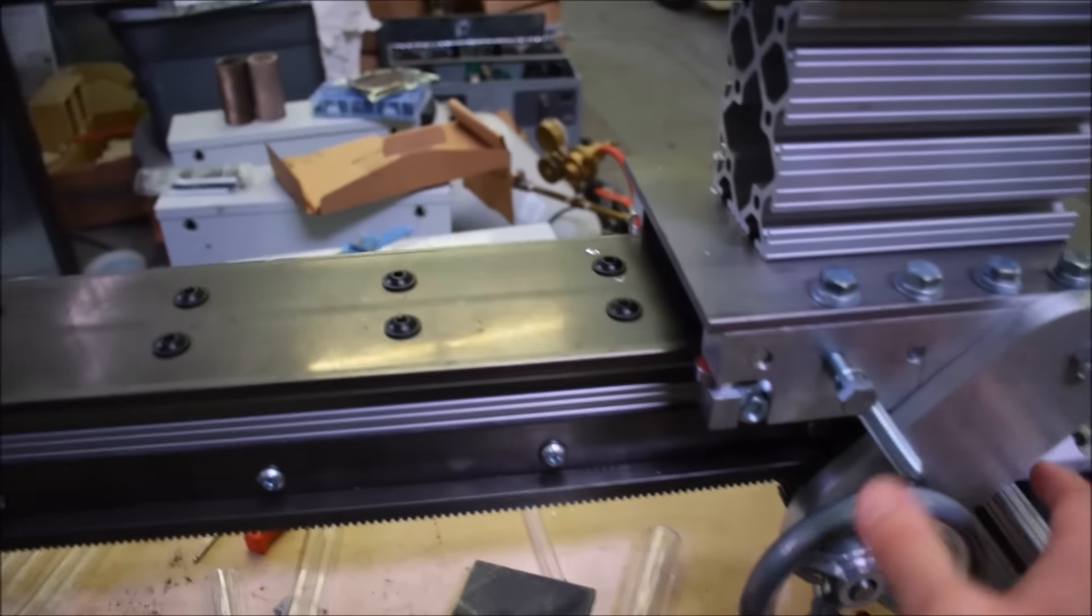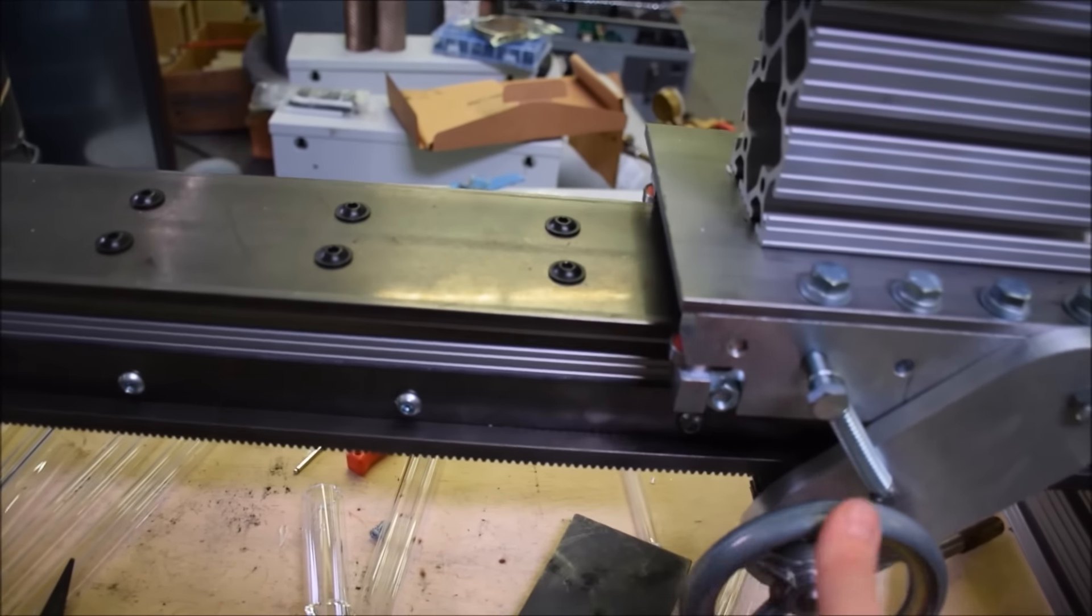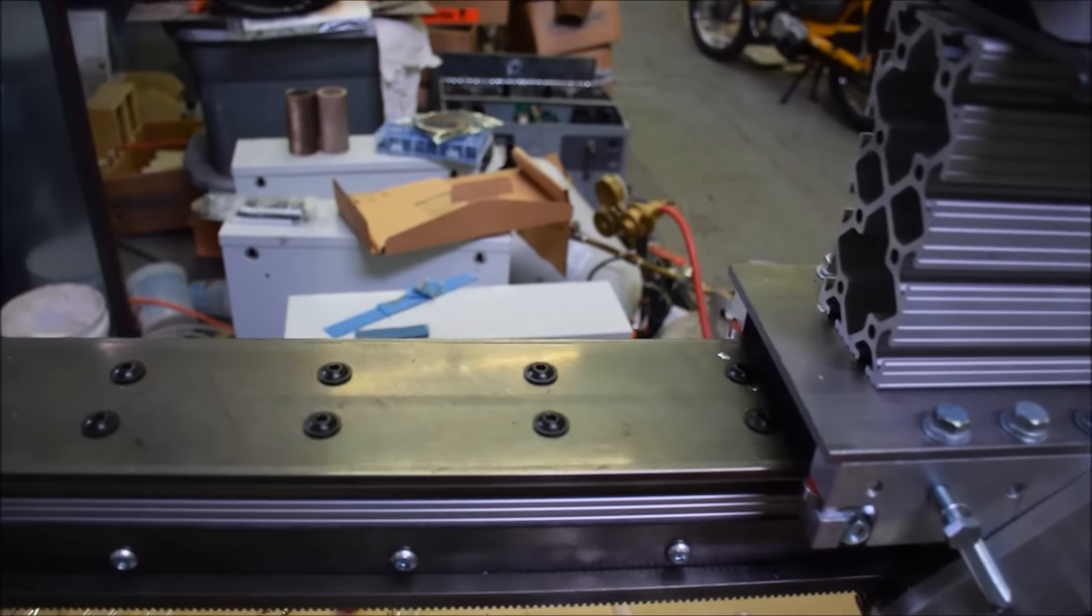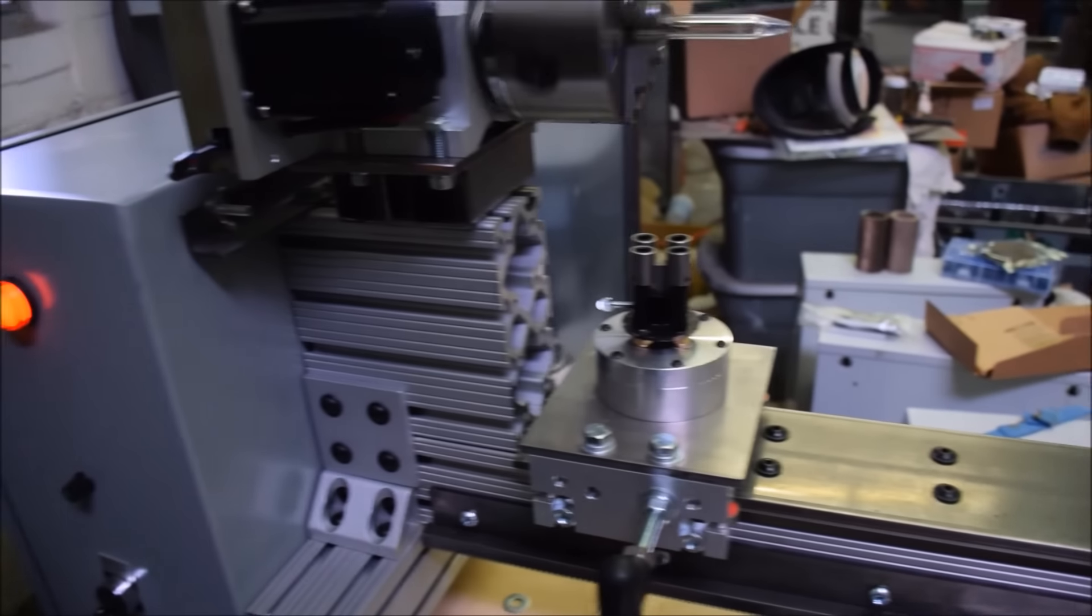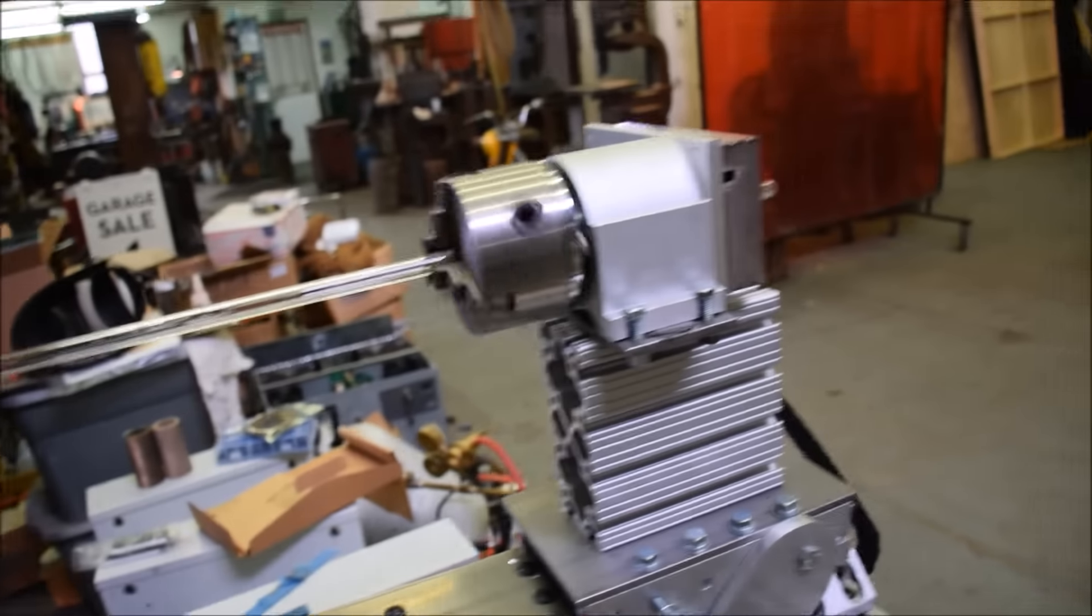I've got a hand wheel that goes to rack and pinion mechanics there. Runs really, really smooth. 80-20 construction with the frame. Really nice, bolts together. Almost everything on this lathe has been just kind of bolted together out of the box. There's really minimal fabrication that needs to be done.